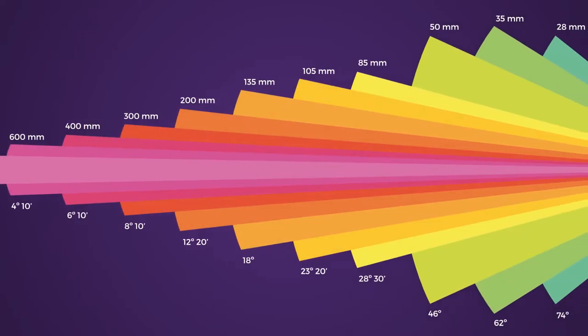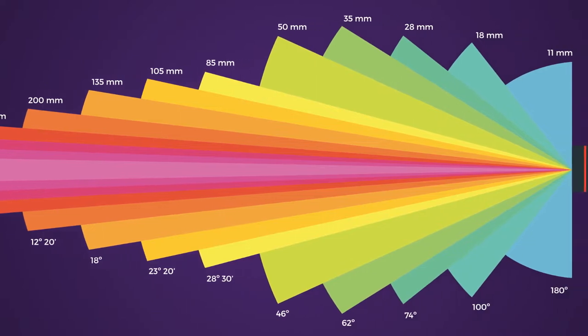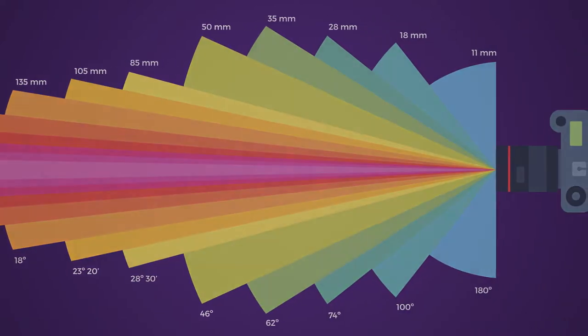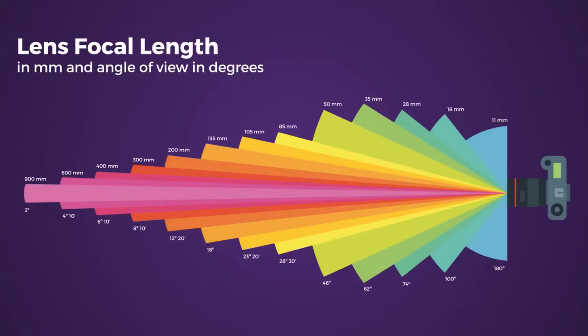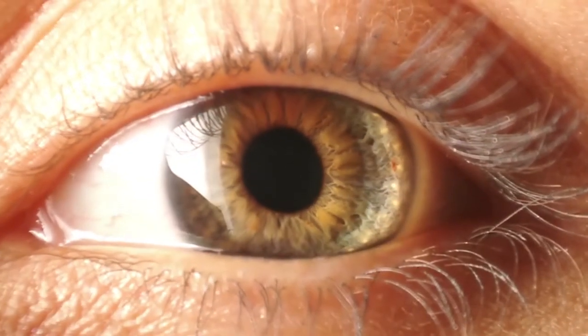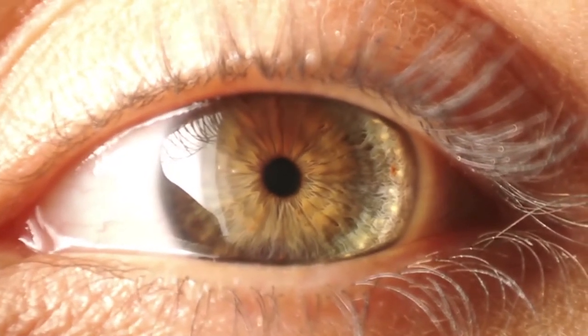The field of view is the part of the world visible through the camera, and it is dependent on the focal length of the lens. A lens with a short focal length, such as a fisheye or wide-angle lens, will allow for a wider field of view. Lenses with a longer focal length have a narrower field of view. In digital photography, a lens with a focal length of 35 millimeters will replicate the field of view of the human eye.